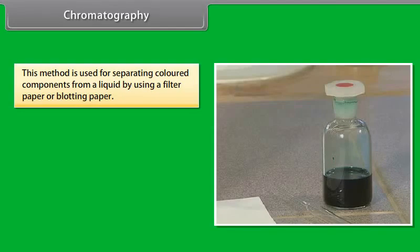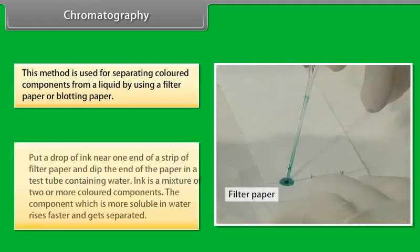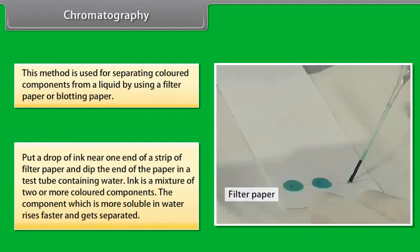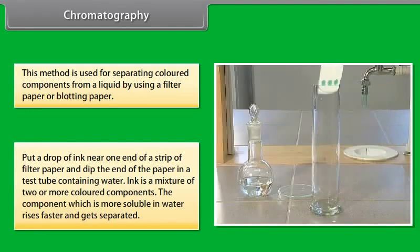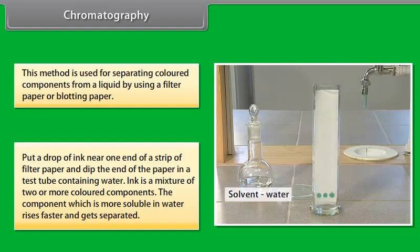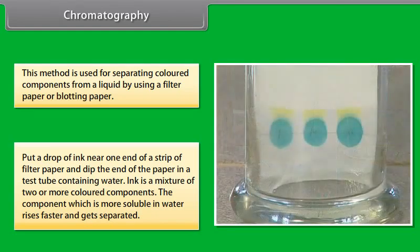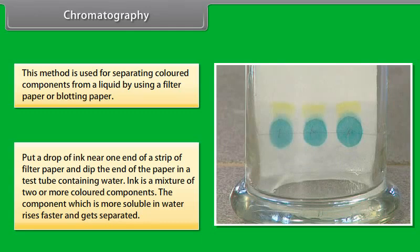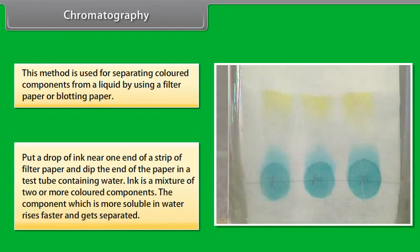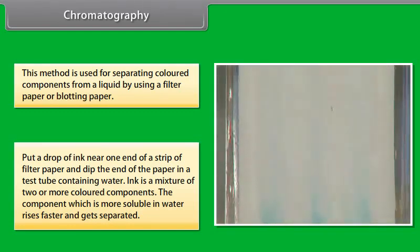Chromatography. This method is used for separating colored components from a liquid by using a filter paper or blotting paper. Put a drop of ink near one end of a strip of filter paper and dip the end of the paper in a test tube containing water. Ink is a mixture of two or more colored components. The component which is more soluble in water rises faster and gets separated.